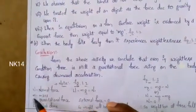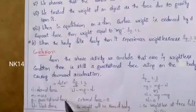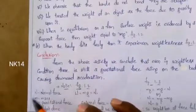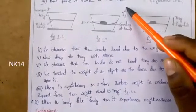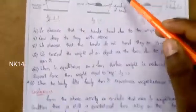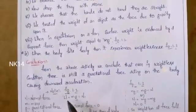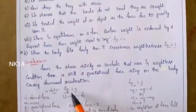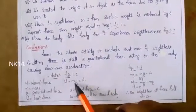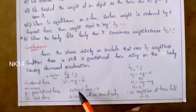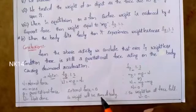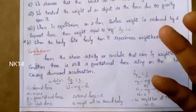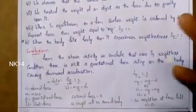An important note: N equals normal force, m equals mass, g equals gravitational acceleration, and W equals weight. For figure 1.2, the normal force acts upward and gravitational force acts downward. The formula is: W = mg = N, meaning mass times gravitational force equals normal force, so external force equals zero and the weight of the body remains the same.